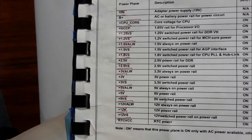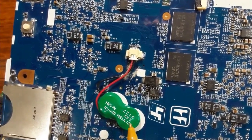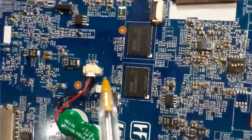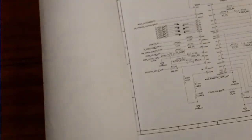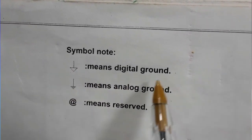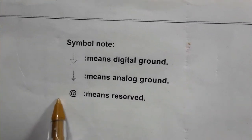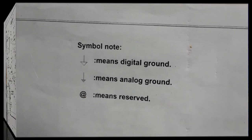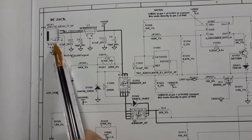This is the RTC real-time clock — 3.3V RTC voltage. Here we have 'C in' which means connector. This symbol indicates digital ground, and this one indicates analog ground. When you find 'sample' it means reserved.